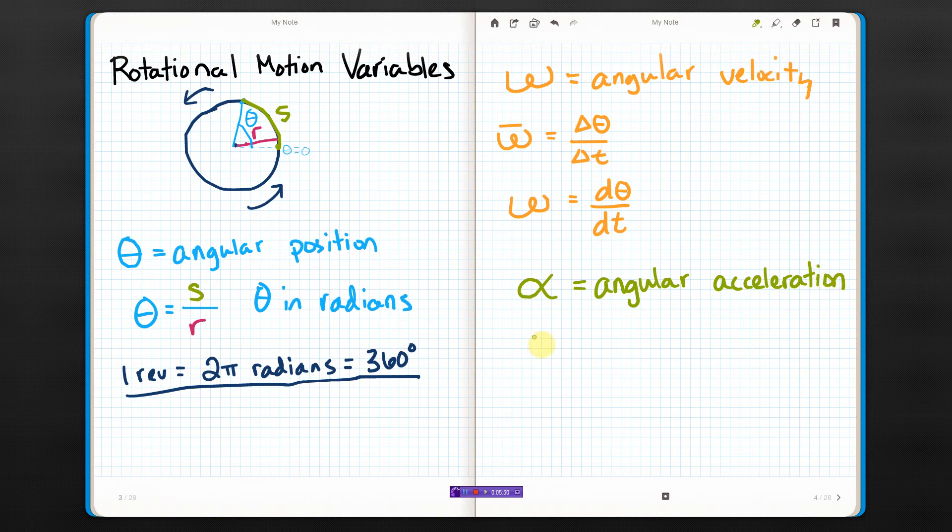The average angular acceleration is the change in angular velocity over time, or you can use the instantaneous angular acceleration, which is the derivative of angular velocity with respect to time. Position, take the derivative, you get velocity. Take the derivative of velocity, you get acceleration. It works back the other way: if you take the integral of acceleration, you get angular velocity, and the integral of that gives you position.